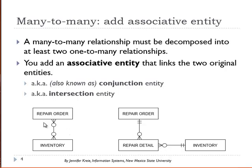The minimum of zero, maximum of many defines the inventory to repair order relationship, and that is what you see here. When you have an associative entity, that particular entity is going to have a minimum of one and a maximum of one with the related table.